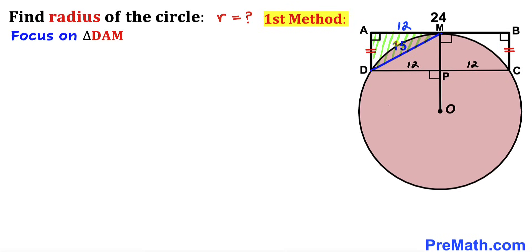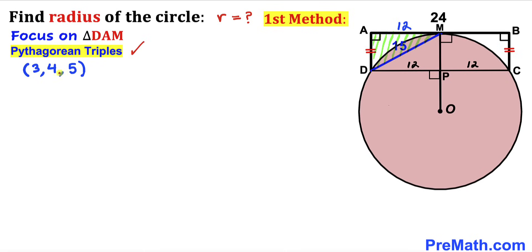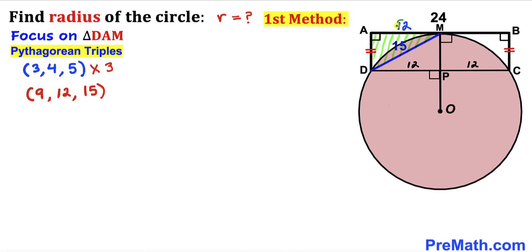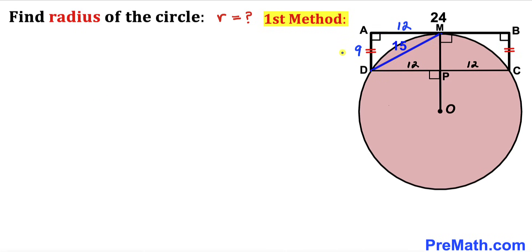Now let's focus on right triangle DAM, whose known side lengths are 12 and 15, and side AD is unknown. We recall the Pythagorean triplets 3, 4, 5 and multiply by 3 to get 9, 12, 15. This matches our sides 12 and 15, so AD must be 9 units. Therefore MP is 9 units and PC is 9 units as well.